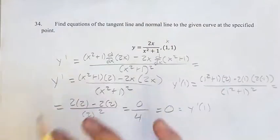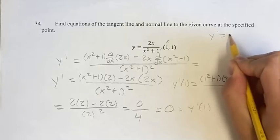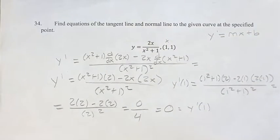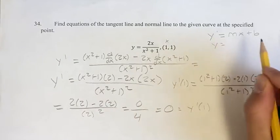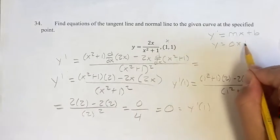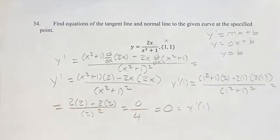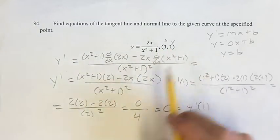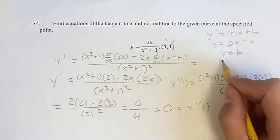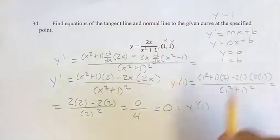So the equation of the tangent line, y equals mx plus b. Well, we know that m, our slope, is 0, so y equals 0x plus b, so y equals b. Now we can solve for b, since we know that the point (1, 1) is on it. Plugging in y into this equation, we get b is 1. So therefore, our equation is just y equals 1.